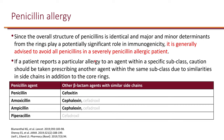When it comes to cross-reactivity, we can think of similar side chains. Penicillin itself has a side chain similar to cefoxitin. So if someone had a non-severe reaction to penicillin like a rash, they're more likely to also have a similar reaction to cefoxitin. For amoxicillin and ampicillin, their side chain is similar to cephalexin, so someone with a non-severe reaction to one of these is more likely to have a similar reaction to cephalexin.